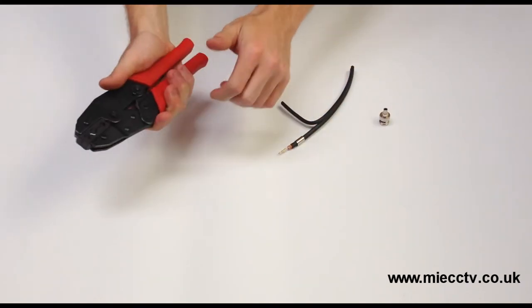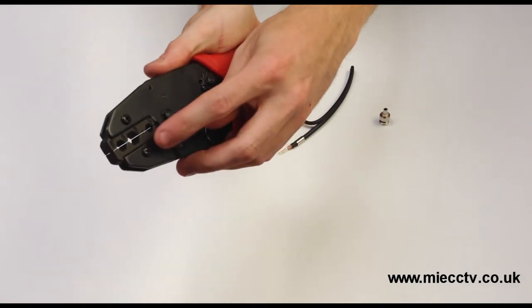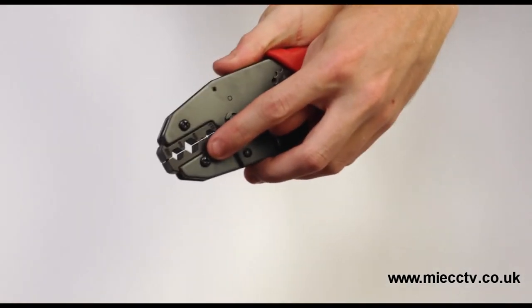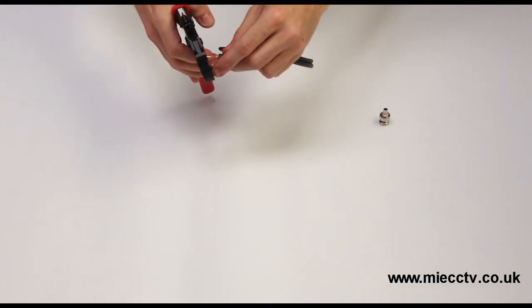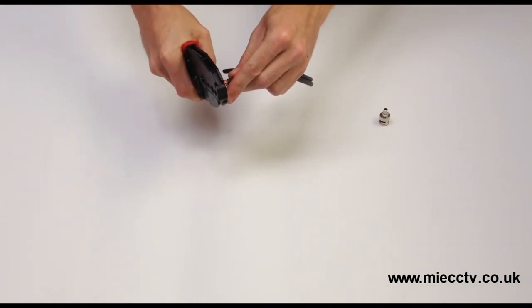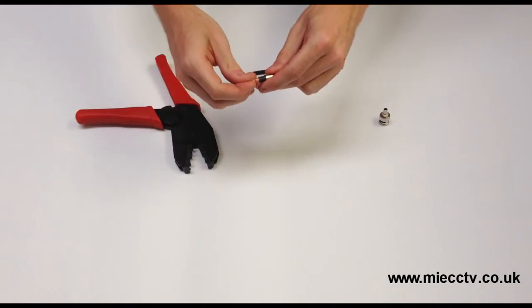Our BNC crimp connector requires a 0.068 inch crimp so please ensure your crimp tool has the appropriate cavity for crimping. Now place the pin into the cavity and crimp it down using the ratchet to ensure the pin is secured tightly.